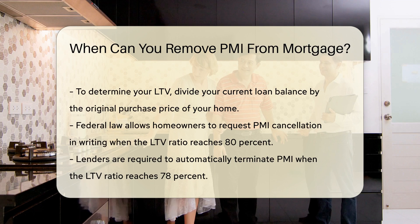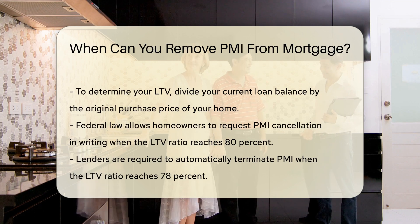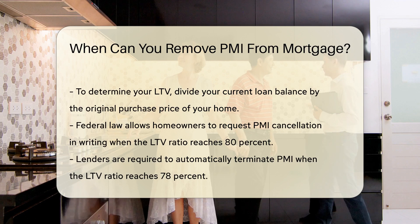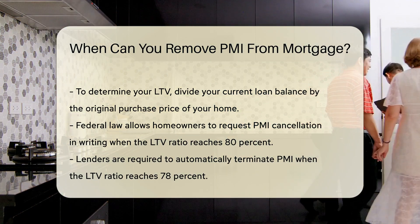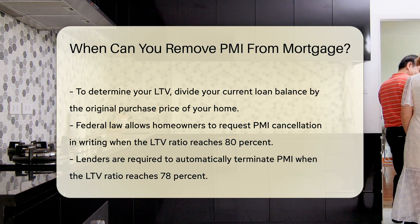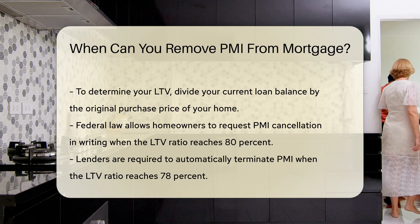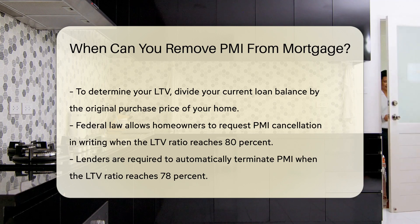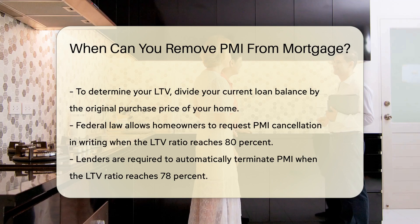Federal law allows homeowners to request PMI cancellation in writing when the LTV ratio reaches 80%. However, lenders are required to automatically terminate PMI when the LTV ratio reaches 78%. This automatic termination does not require a written request from the homeowner.